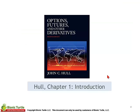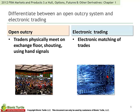Looking at chapter one, we're asked to differentiate between an open outcry system and electronic trading. In general, there's a shifting trend away from open outcry and toward electronic trading. In open outcry, traders physically meet on an exchange for shouting and using hand signals. In electronic trading, there's electronic matching of trades.